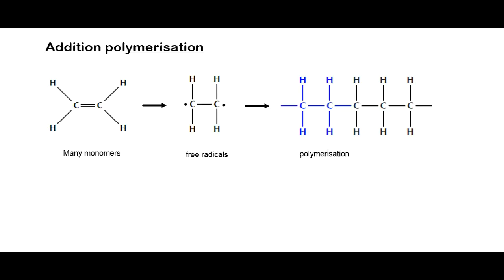We can see polymerization taking place here, where the repeating unit in this polymer is shown in blue — two carbons with the hydrogens attached, all in single chains. The double bond in the monomer breaks up to form free radicals under high pressure and temperature, and these undergo rapid addition reactions forming long single-chain molecules.